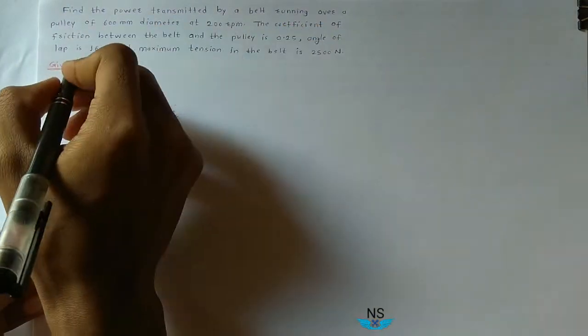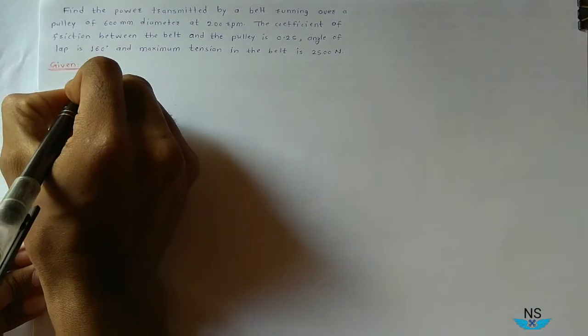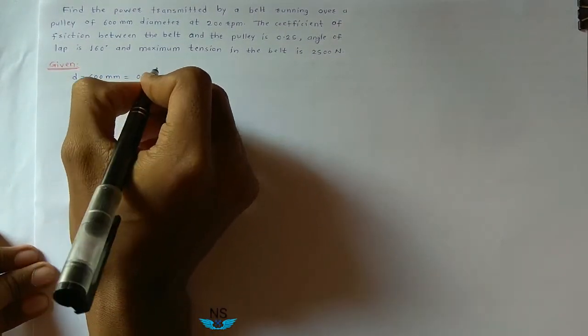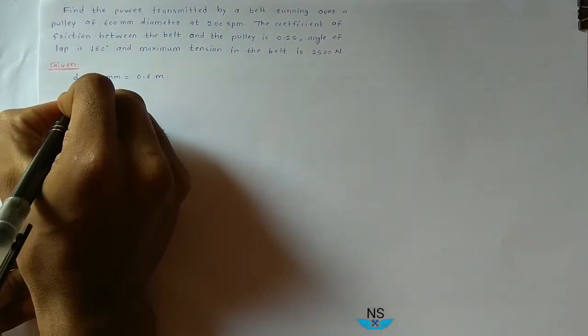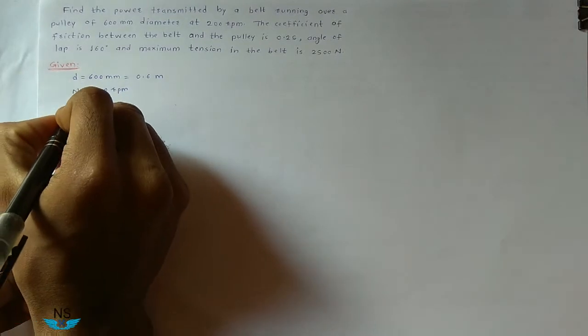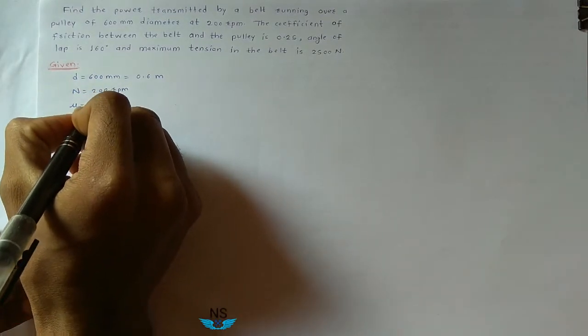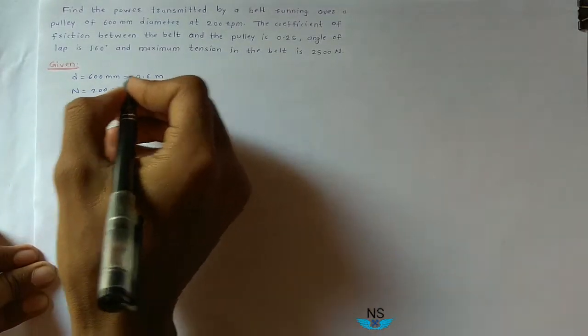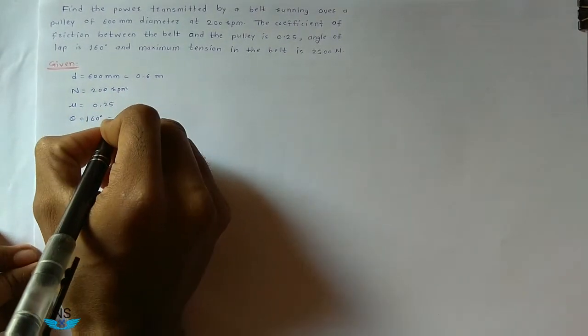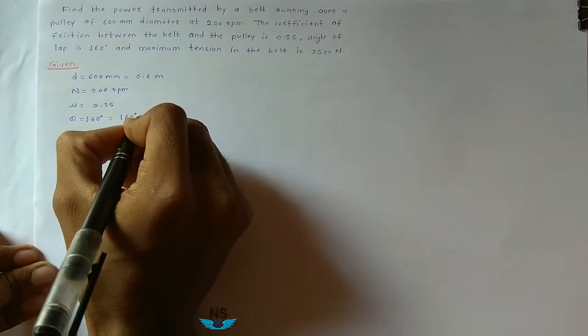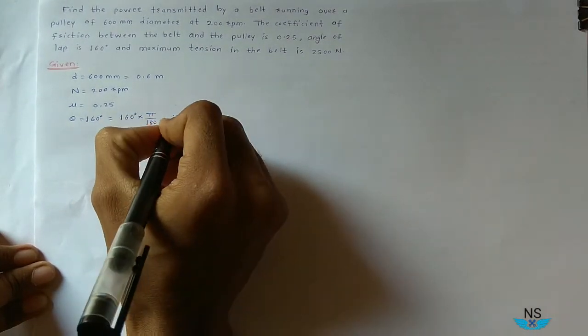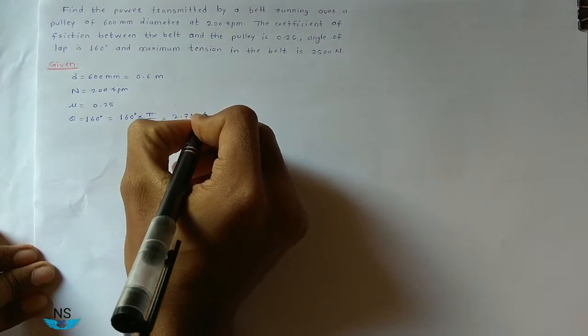First, given: a belt running over a pulley of diameter 600mm at 200rpm. The coefficient of friction mu is equal to 0.25, angle of lap theta is equal to 160 degrees. Convert it into radians, so 160 into pi by 180, that is equal to 2.7925 radians.